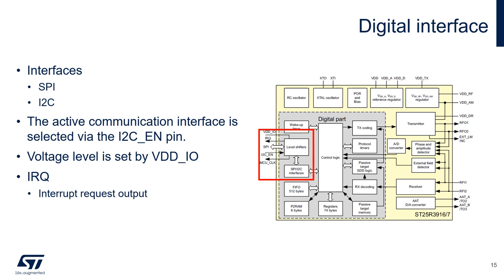The ST25R3916 offers both an I2C and an SPI interface. The interface selection is done via the I2C enable pin. If this pin is set to 0, the SPI interface will be active; a 1 to this pin will enable the I2C interface. These serial interfaces are activated by either commands from the MCU or the IRQ pin.